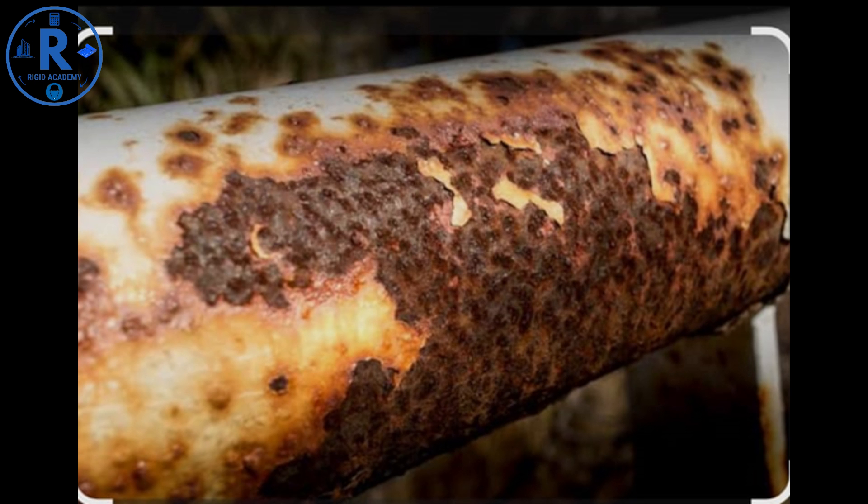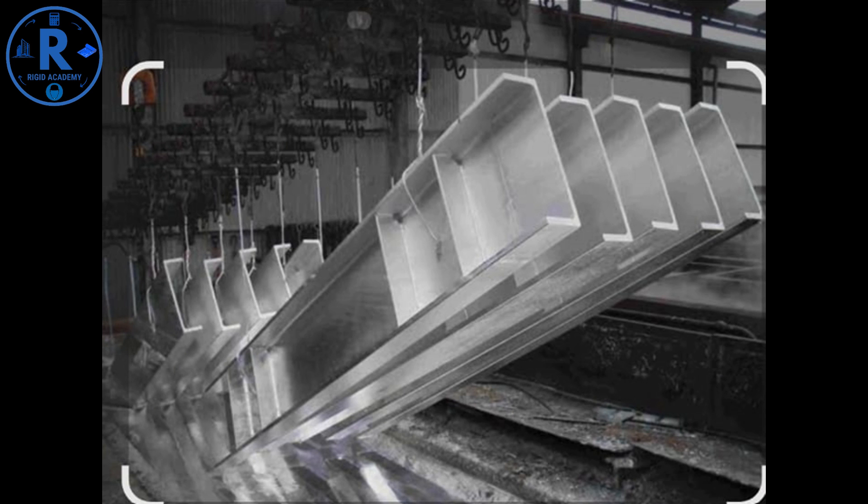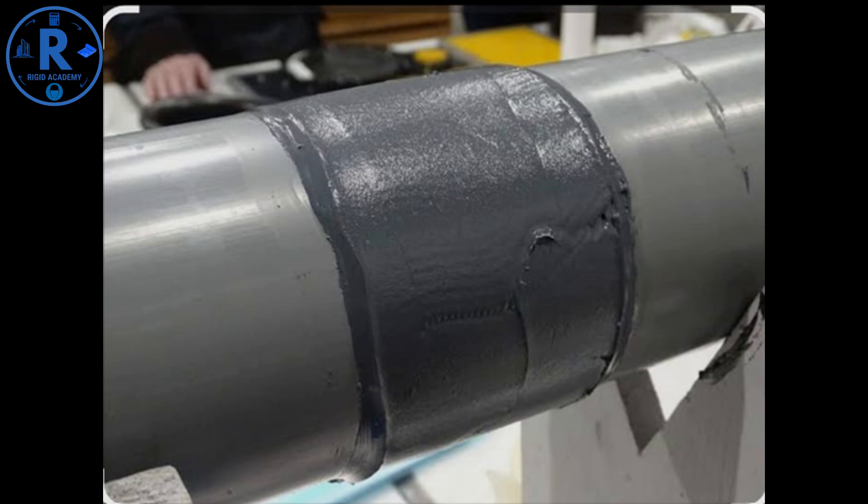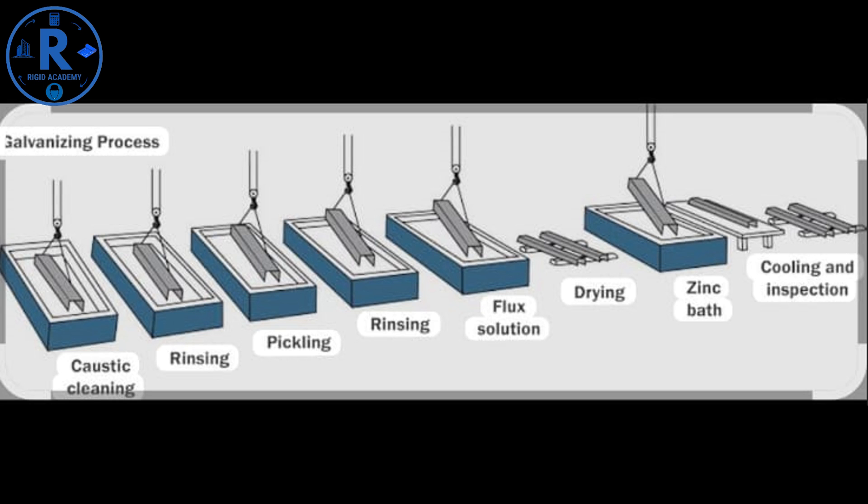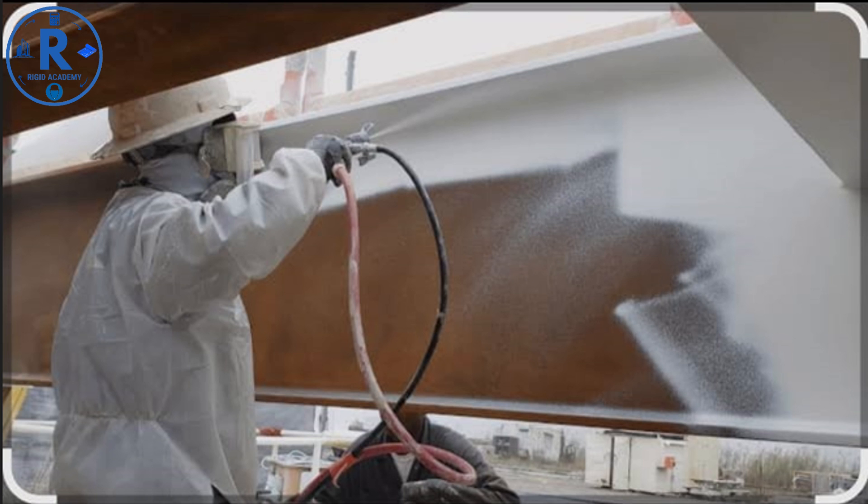Corrosion protection. Industrial warehouses often operate in harsh environments. Protect your steel by hot-dip galvanizing, applying epoxy or polyurethane coatings, or using weathering steel like corten in specific cases.